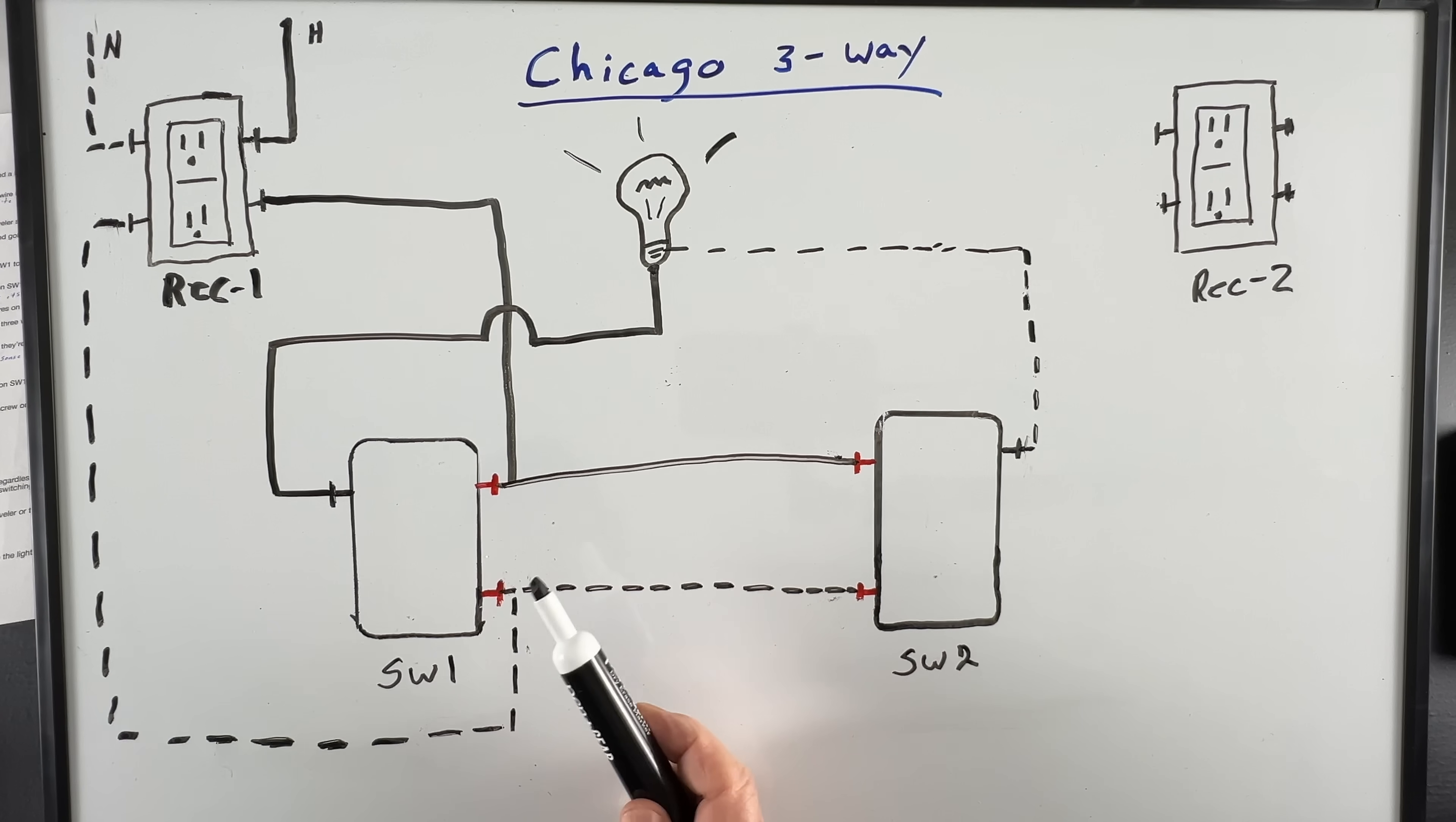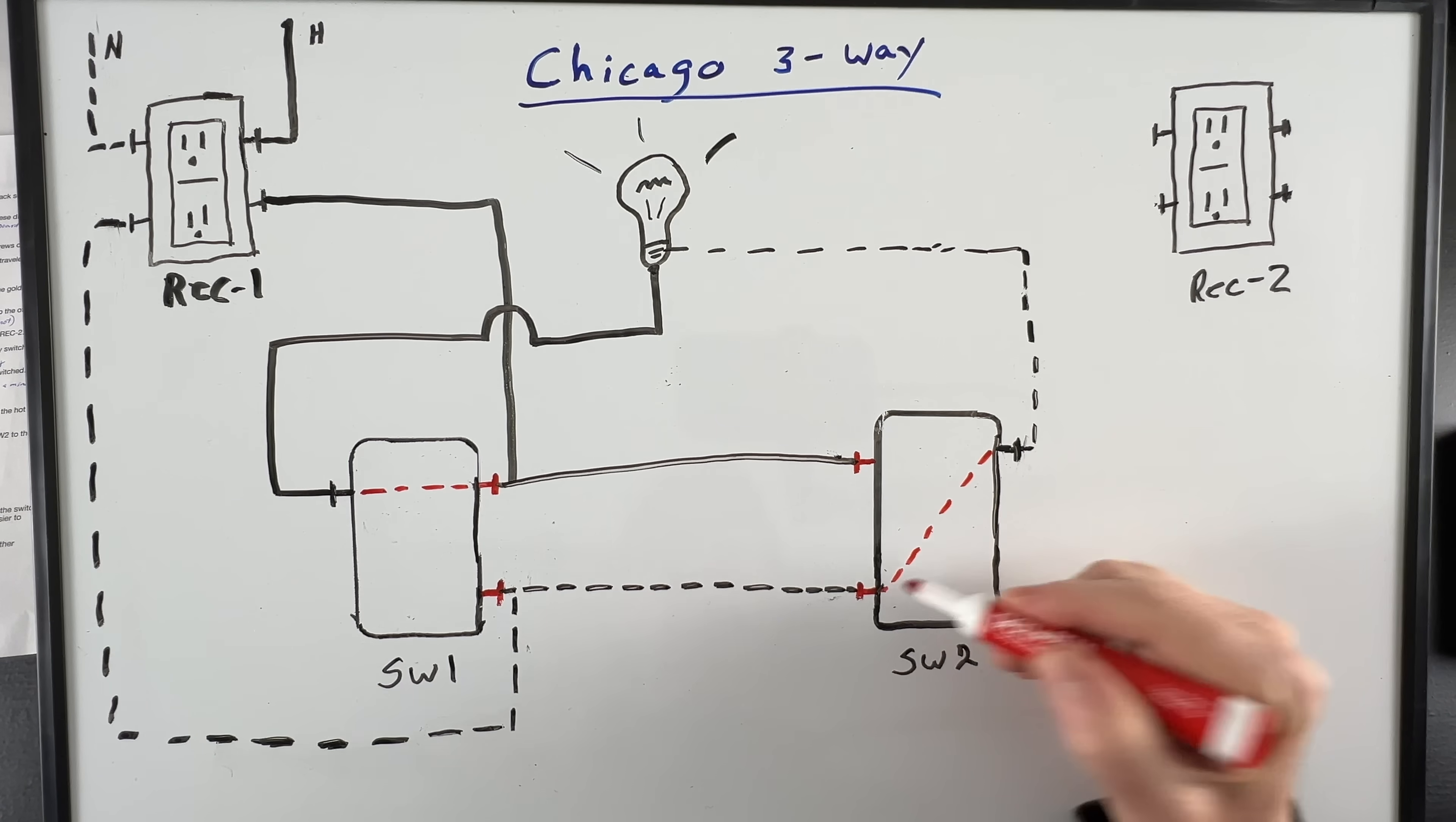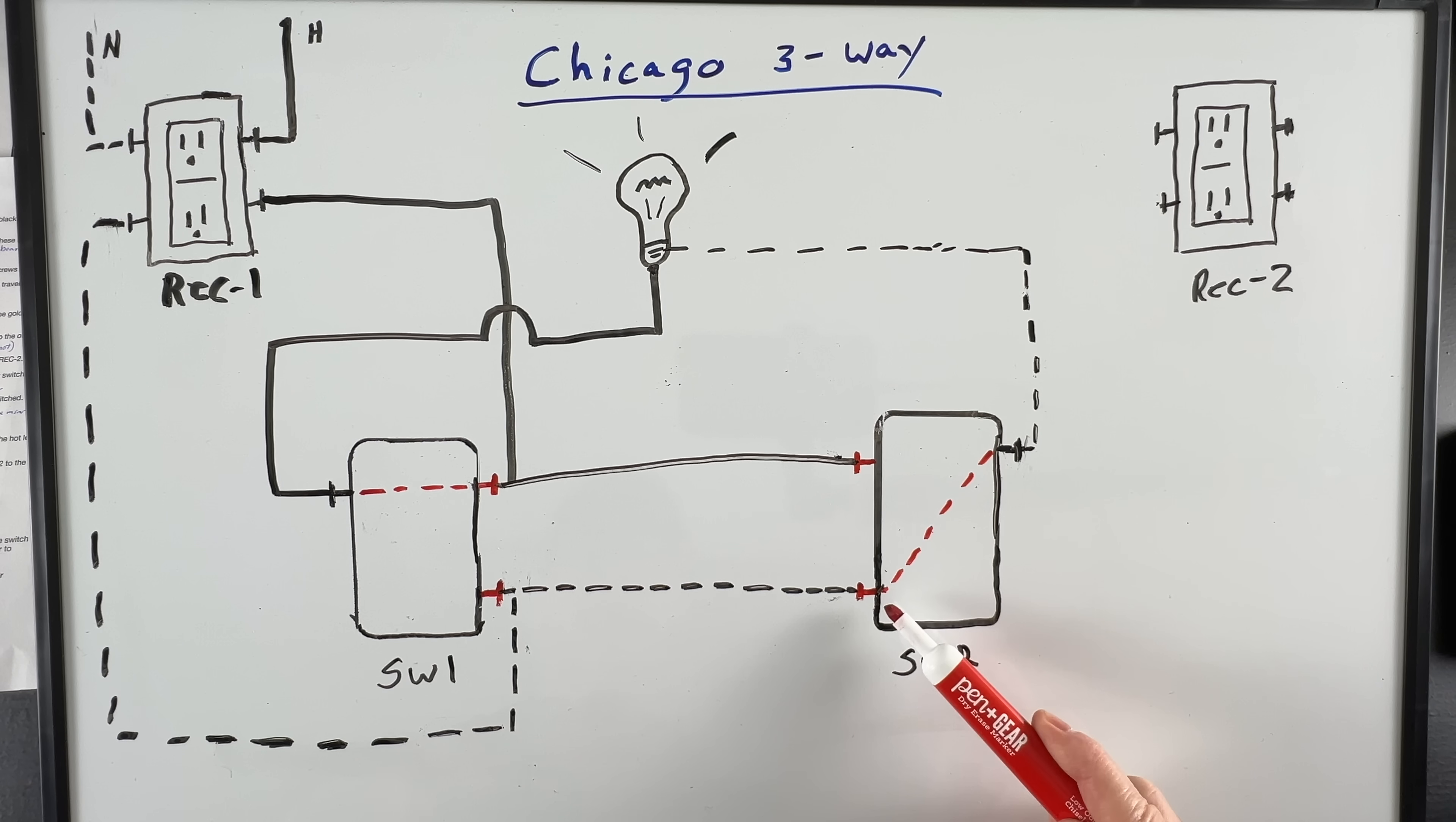A three-way switch works by connecting the common screw to one traveler or the other depending on the position of the switch. So let's say that switch one is in the up position, and switch two is in the down position. In this scenario, our line power will come from receptacle one down to switch one, through switch one and up to our light. Our neutral return will return from the light down to switch two, through switch two over to switch one and then back to the receptacle. This completes the circuit so our light will be on.